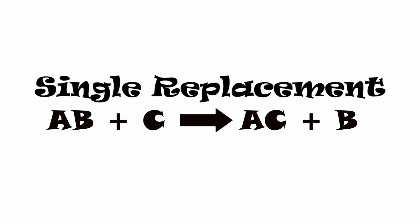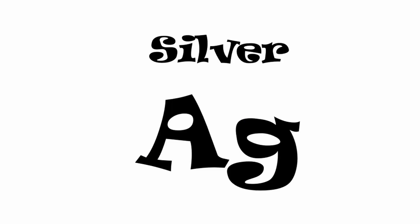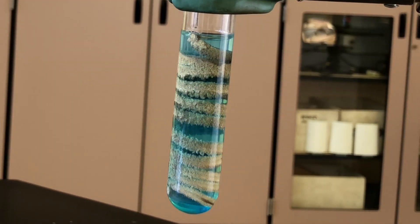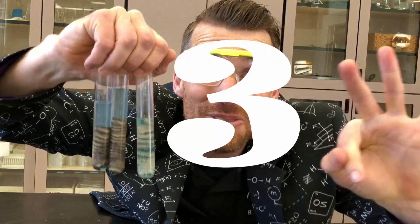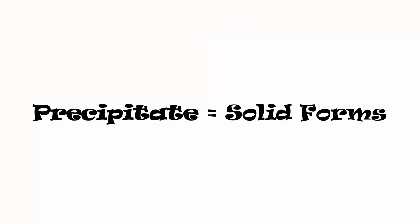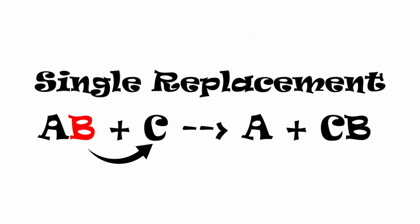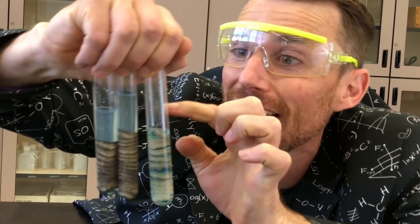Third reaction: single replacement. Copper — an aesthetically pleasing coil — in silver nitrate. What's going on inside the solution? The copper, which is solid, is getting replaced by the silver, which is aqueous, and the silver is going to precipitate out of the solution. The silver precipitated on top of the copper wire. The copper was replaced and is floating around — it made the water a little bit blue. Single replacement.